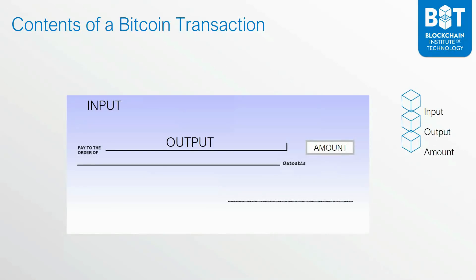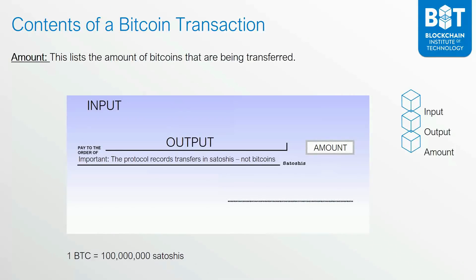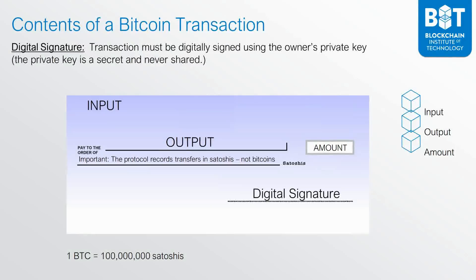Finally, we have the amount of the transaction, which lists the amount of bitcoins that will be transferred. Notice that the Bitcoin protocol does not measure transactions in terms of bitcoins, but rather in Satoshis. There are 100 million Satoshis in one Bitcoin, which means that if a transaction is less than one Bitcoin, it's okay because the transaction will be measured ultimately in Satoshis.